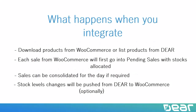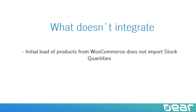When you integrate, you can either download products from WooCommerce into Deer or list your Deer Inventory products on WooCommerce. Each sale from WooCommerce will first go into the pending sales section of Deer Inventory, and stock will be allocated to those orders immediately. Orders are processed every hour unless you select the daily consolidation method, which consolidates all orders for the day at a specified time. Stock level changes will be pushed from Deer to Woo on an optional basis. Note that the initial load of products from WooCommerce will not import stock quantities — these will need to be entered via the stock on hand template in the inventory module.